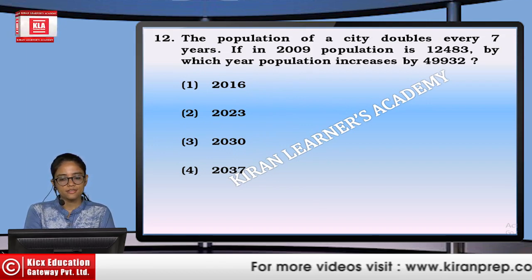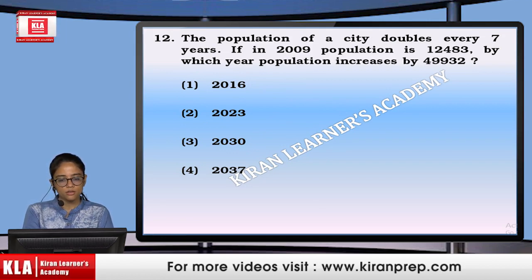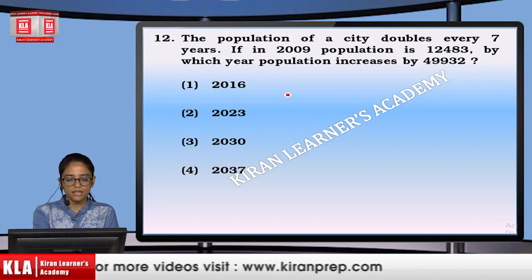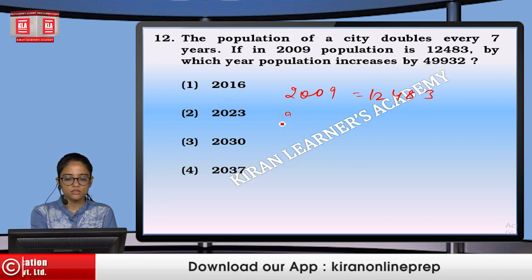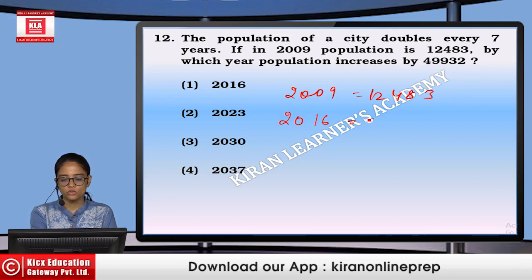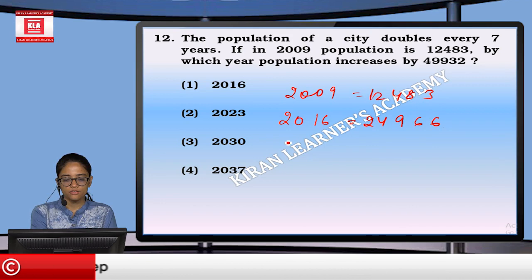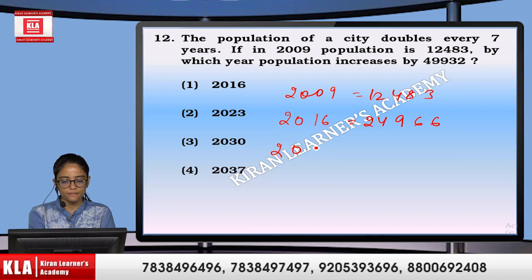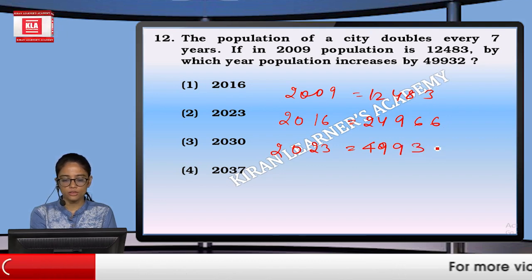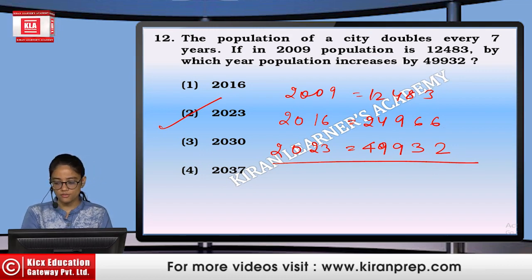The population of a city doubles every 7 years. The population was 1,24,83 in 2009. After 7 years (2016) it doubled. After another 7 years (2023) it doubled again to reach the target number. So in 2023 the population will reach the required figure. The option is second.